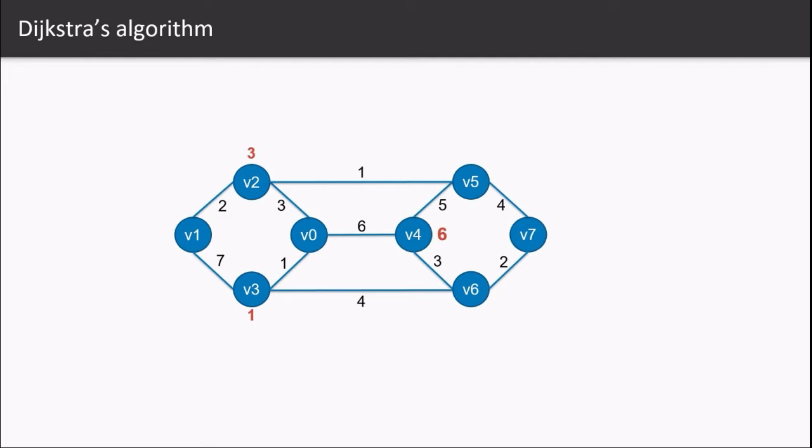Starting from v0, the possible paths are to v2, v3, and v4 with weights three, one, and six, respectively. So we will connect v0 with v3 because that has the shortest path. Mark the v3 node as v0 and the weight one.